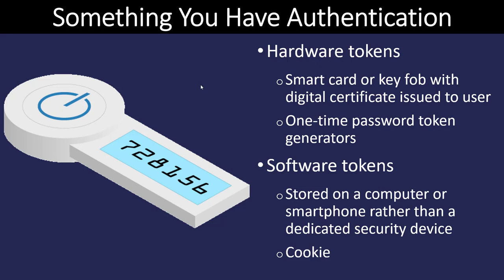Something you have is going to be like a hardware token — you may have seen these key fobs that generate a number every 60 seconds, and if you don't have the hardware token you're not going to be able to get into the website or computer. A software token does the same thing using software. Google Authenticator on your smartphone and Duo are examples of this — instead of having a separate device, you do this through software.